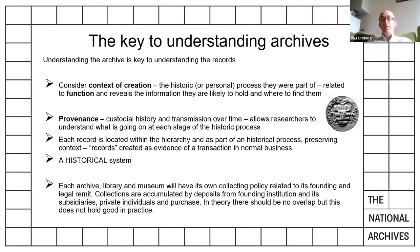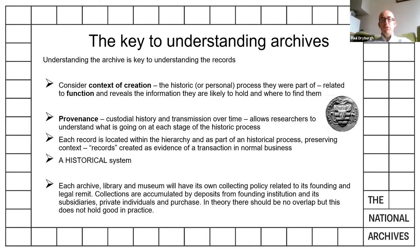In terms of where archives are now, you have to understand provenance — things like custodial history and transmission over time. Why is a particular record in the location it is now? Why has it been kept? Why have other records not been kept? Each record tends to be located within a hierarchy and is created as part of this historical process, which preserves that context. Each archive, library, and museum has its own collecting policy relating to its founding and its legal remit.